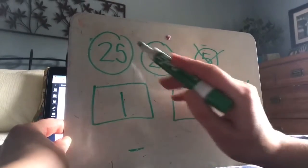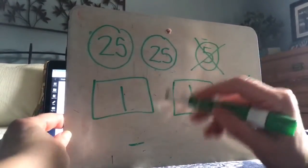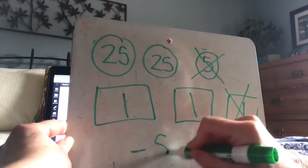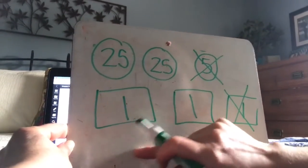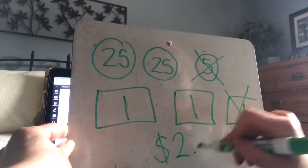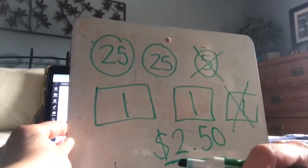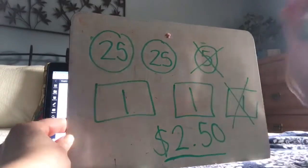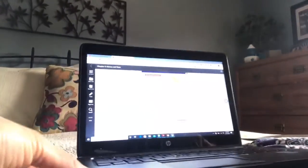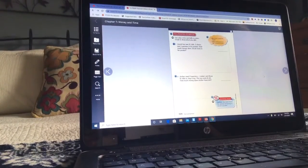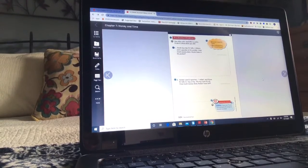Then I count the money she has left: one dollar, two dollars, two dollars twenty-five, two dollars fifty. And that's what I would write on my workspace. So that's what's happening in our math book today — we are reading word problems, figuring out what's going on, and drawing pictures to solve them.